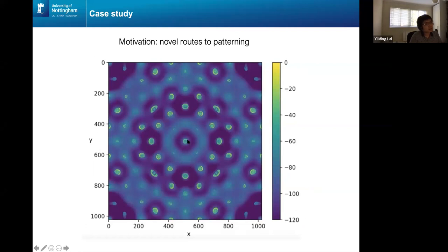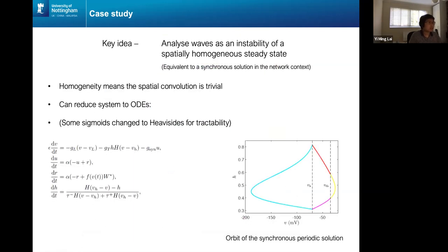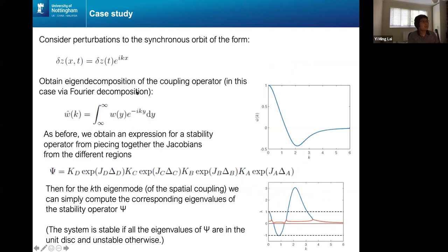So these are the sort of gaps and lurching waves I was talking about. You start with regional activity in the center, which suppresses the area immediately adjacent to that. But then at some point when the initial area stops firing, then the next ring starts firing around that. And so the key idea that we're going to talk about today is to analyze waves as an instability of this spatially homogenous steady state, which would have been just a synchronous solution in the network context. So because of that, the spatial convolution is trivial because you can just put in a uniform value everywhere and the system reduces to this four ODE system. And as before we've changed some sigmoid functions for piecewise functions for tractability. So we just have these four ODEs which we can solve to get this synchronous periodic solution.